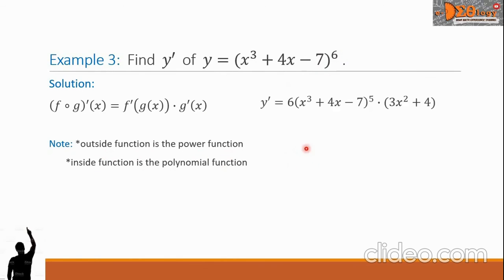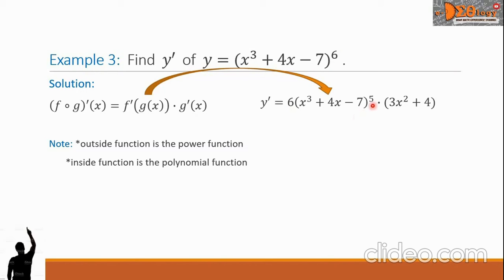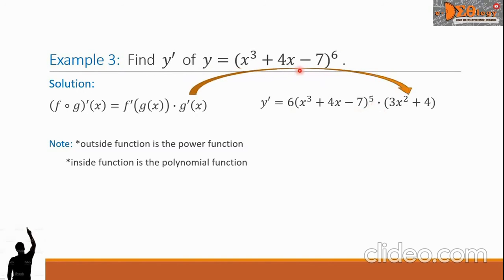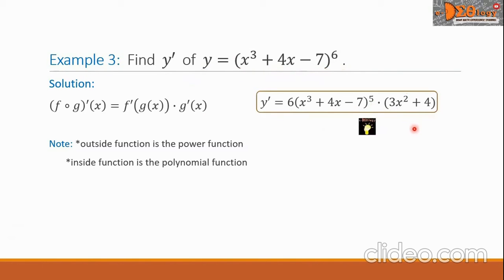For the derivative, we write 6 times the quantity x cubed plus 4x minus 7, now raised to 5, times the derivative of the polynomial function, which is 3x squared plus 4. This is our final answer.